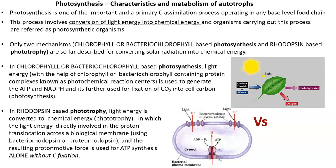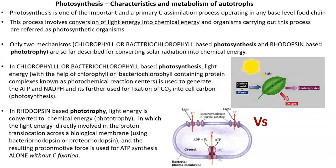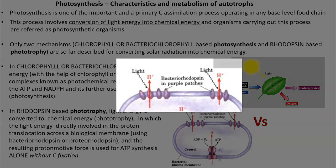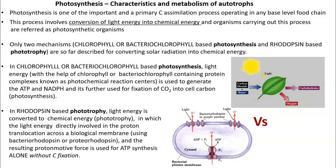Phototrophy is mediated by a special protein called rhodopsin. The function of this protein is to use light energy and convert it into chemical energy without carbon fixation. That is the reason it is referred to as phototrophy and not photosynthesis — synthesis means converting carbon dioxide into cell carbon, and that process does not operate in this group of organisms.